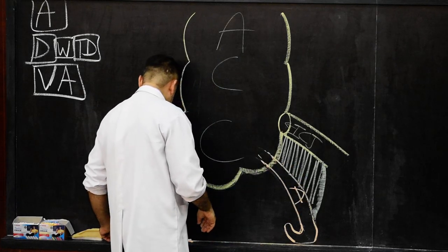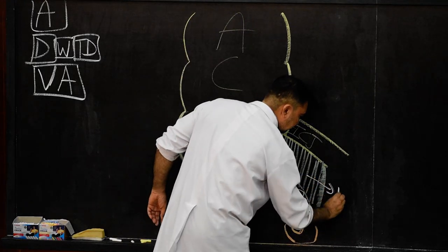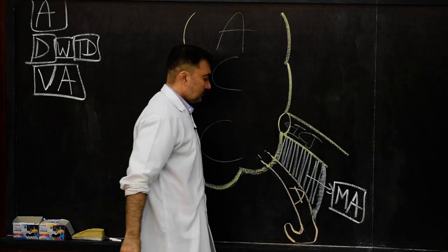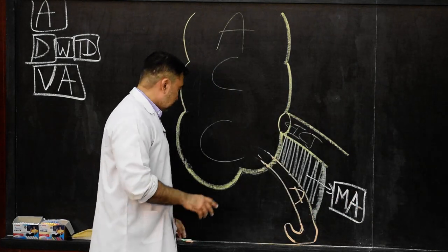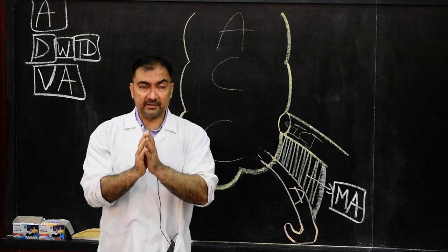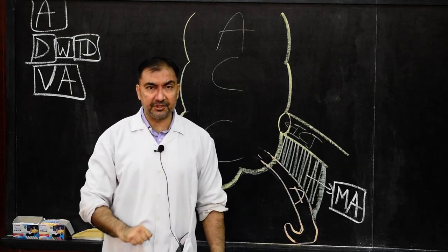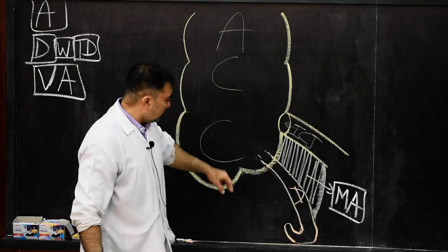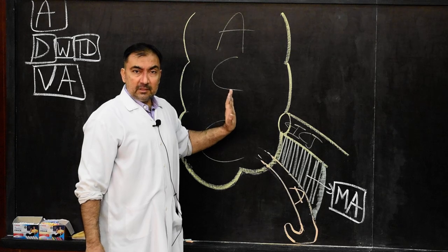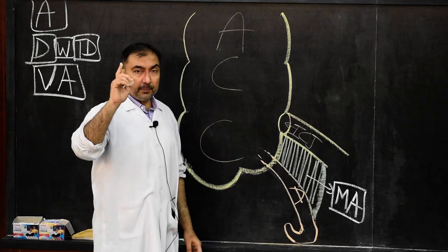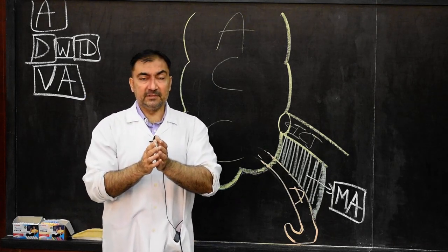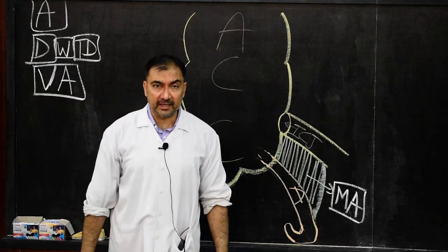You can mark this as the mesoappendix. This is the second important point regarding the introduction of the appendix. The third important point, which is asked in MCQs and viva: although the appendix is a part of the colon — part of the large intestine — it will be devoid of three features which the colon usually has.